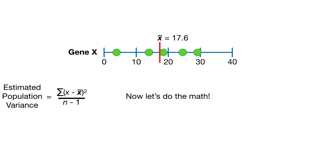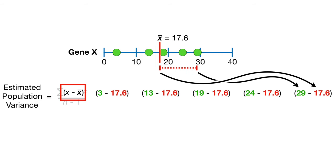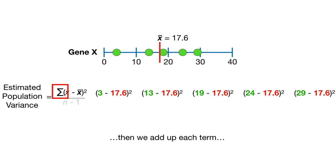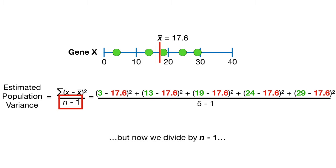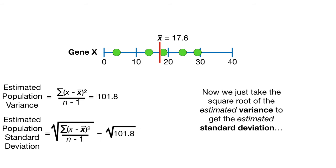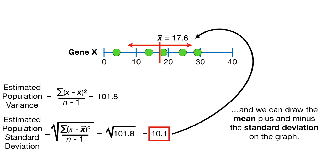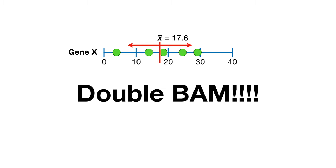Now let's do the math. Just like before, we calculate the differences between the mean and the data, then we square each term, then we add up each term. But now we divide by n-1. And the estimated population variance is 101.8. Now we just take the square root of the estimated variance to get the estimated standard deviation, and we get 10.1. And we can draw the mean plus and minus the standard deviation on the graph.